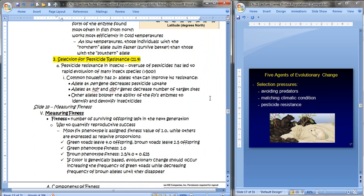And the last here is the selection for pesticide resistance, another example. When we consider this idea of pesticide resistance in insects, which has come from our overuse of pesticides, it's led to the rapid evolution of many insect species, over 500 of them. For example, the common house fly has just three or so alleles that can improve its resistance. For example, an allele at the pen gene will decrease the fly taking up pesticide into its body. The alleles KDR and DLDR genes decrease the number of target sites for the pesticide to actually work. And then other alleles will bolster the ability of the flies' enzymes to identify and detoxify insecticides. Pretty scary. But we see three good examples of selection.